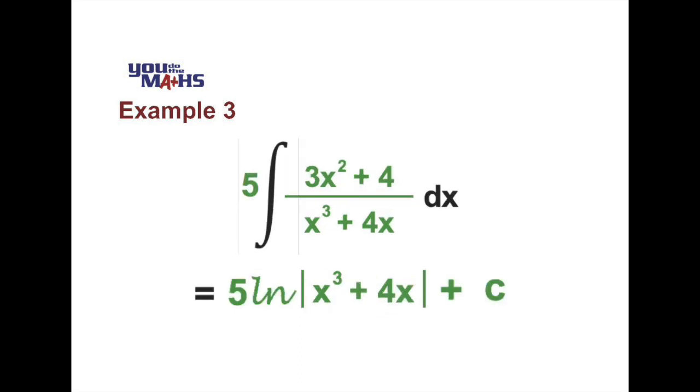So our final solution, we can see that the 5 stays at the front of the natural logarithm, and we have 5 times the natural logarithm of the absolute value of x cubed plus 4x plus a constant.